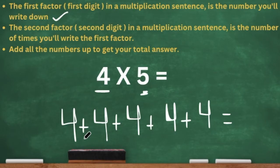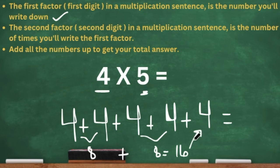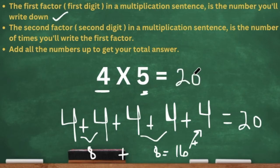So when we added all these fours up, you can just say four plus four is eight, and the other four plus four is eight. Now that other four doesn't have another four to add, so we're just going to add eight plus eight, which is 16. Then we're going to take that last four and add it to the 16 — so 16 plus four, which is 20. That's another way you can add it: you can skip count or you can just add two digits at a time. Four times five is 20.